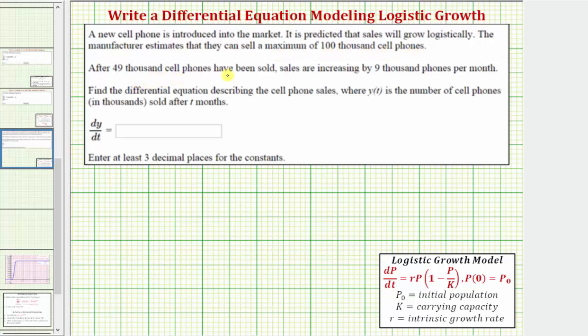After 49,000 cell phones have been sold, sales are increasing by 9,000 phones per month. Find the differential equation describing the cell phone sales, where y of t is the number of cell phones in thousands sold after t months.